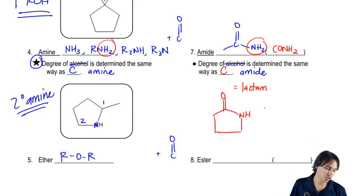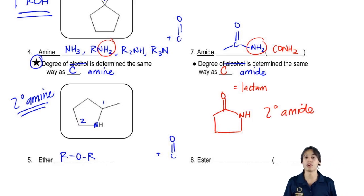What would be the degree of this amide? And it would also be secondary amide, so you could call it a lactam or you could call it secondary amide. Why? Because this nitrogen here is attached to two carbon groups. See how that works? So it's just the same as we were using for the amine and also the same as we were using for carbon.